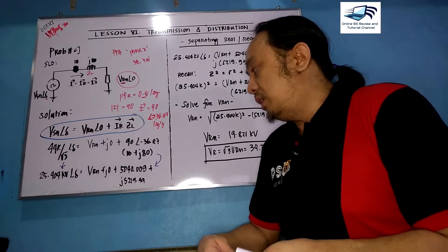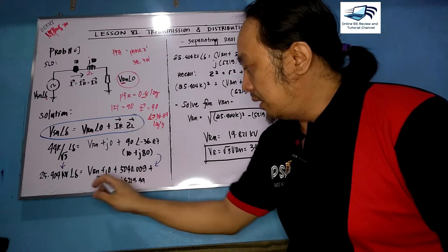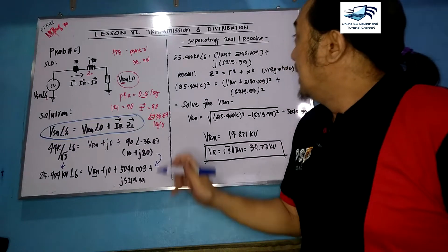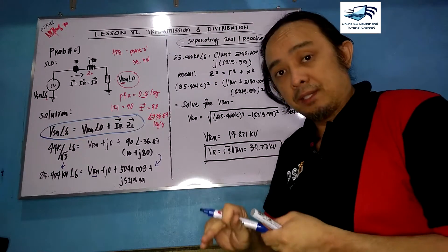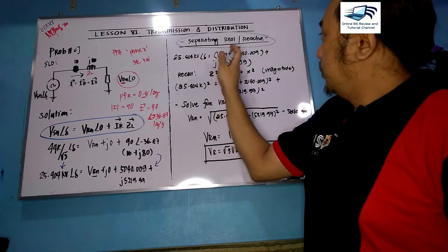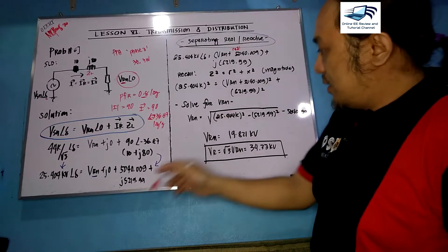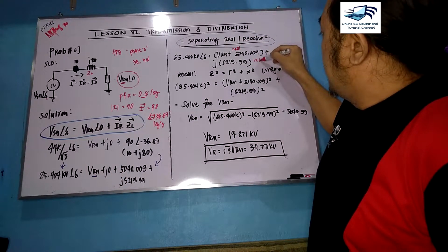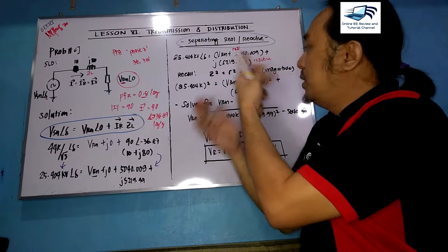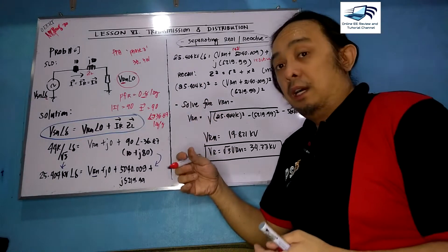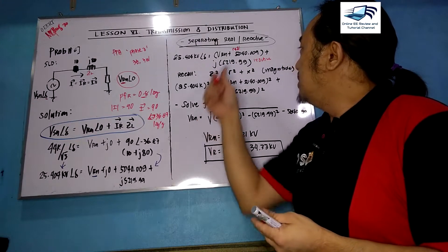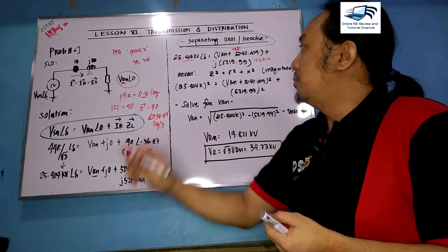Multiplying 90 at negative 36.87 degrees by (10 + j30) yields a complex result. Our main goal is to find VRN, so we separate real and reactive parts. The real part gives VRN plus 504, and the reactive part gives 5219.99 (approximately 5220). The left side magnitude is 25.404 kV at angle alpha, expressed in polar form using Euler's identity.